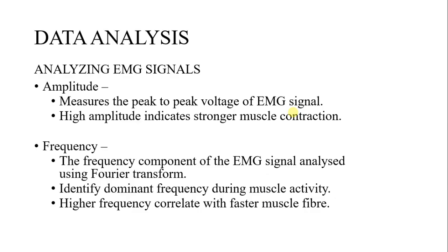In data analysis of EMG signals, amplitude measures the peak-to-peak voltage of the EMG signal. High amplitude indicates stronger muscle contraction. Frequency components of the EMG signal are analyzed using the Fourier transform to identify the dominant frequency of muscle activity. High frequency correlates with faster muscle fibers.